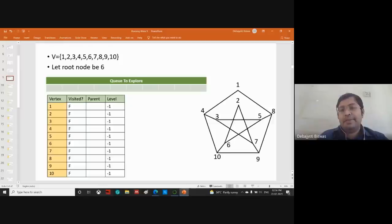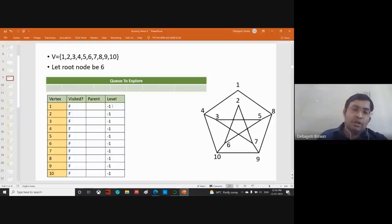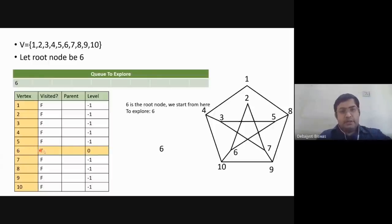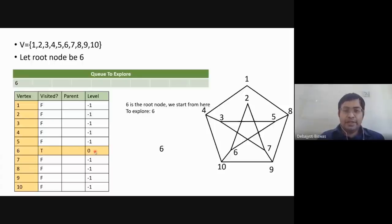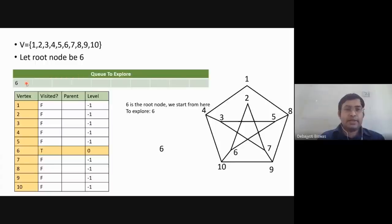The parent vertex is the vertex from which we traveled to another vertex. All vertices are initialized with level minus one and parent empty. We start with root node six. Six is now visited — 'visited' changes to true, level is set to zero, and six has no parent. Six is added to the queue. From six we can go to five, two, and ten.